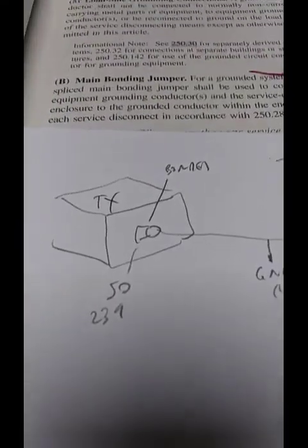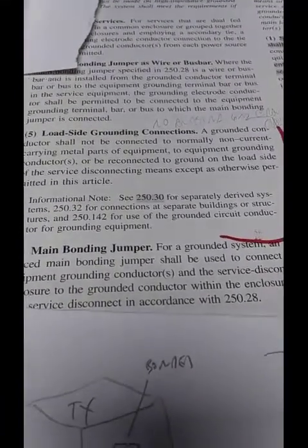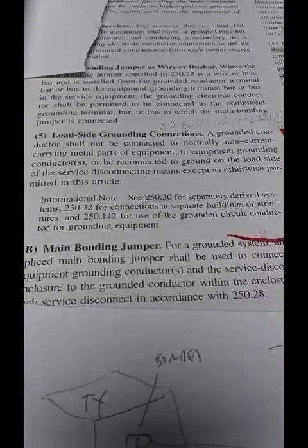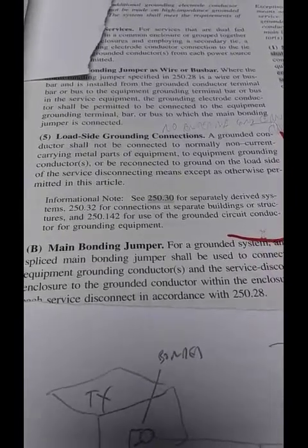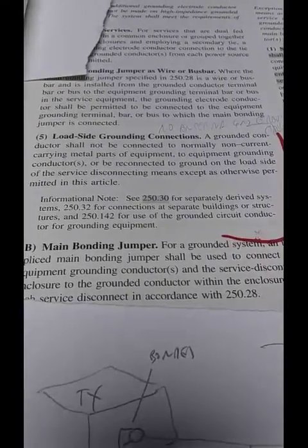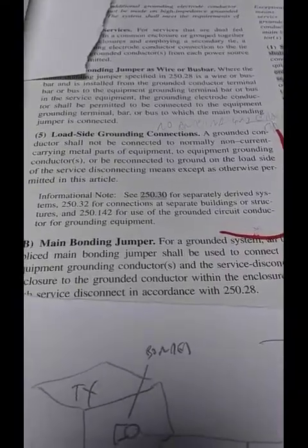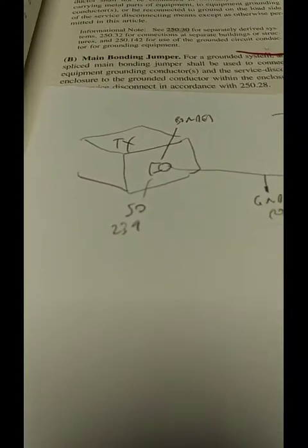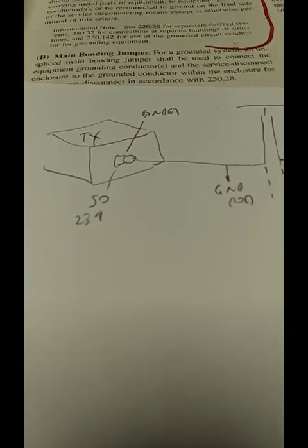Put a ground rod here, or put a ground rod there, run in the ham shack, and violate NEC 250.24A(5). Load side grounding connections. A grounded conductor shall not, that's not a question, not an option, it's an order, shall not be connected to normally non-current carrying metal parts of the equipment or reconnected to ground on the load side of the service disconnecting means. It is a code violation to ground that coax connected to that transmitter or transceiver where the SO-239 is bonded to the chassis. Because the chassis is not a normally current carrying conductor. If they're for RF shielding, that is a code violation right there.